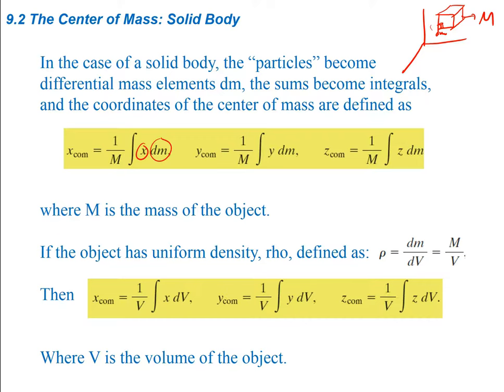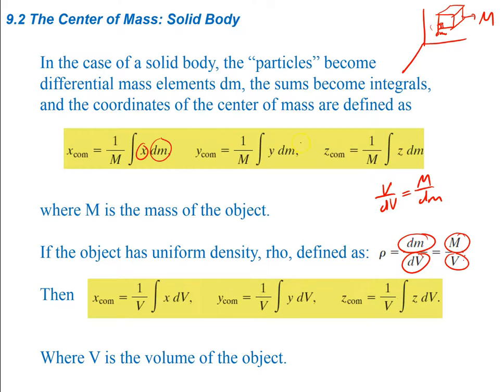Now if the object has uniform density rho, defined as rho equals dm/dv, the density is mass divided by volume. For a differential mass element, it's the differential mass divided by a differential volume. Rearranging, dm equals rho*dv. Since the densities cancel for uniform objects, this can also be expressed in terms of volume rather than just mass.